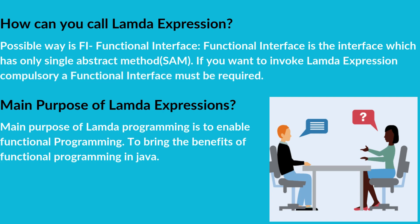How can you call a Lambda Expression? The possible way is by using a functional interface. A functional interface is an interface which has only a single abstract method, SAM. To invoke a Lambda Expression, a functional interface is compulsory.